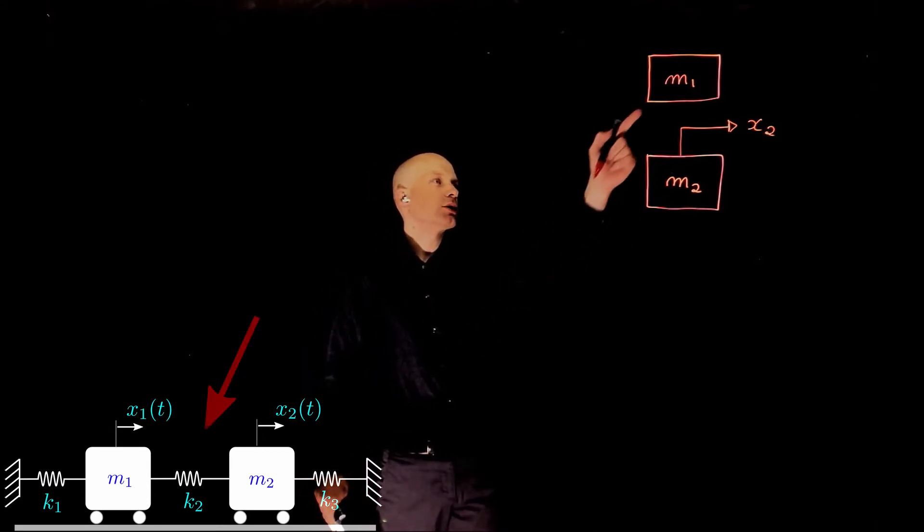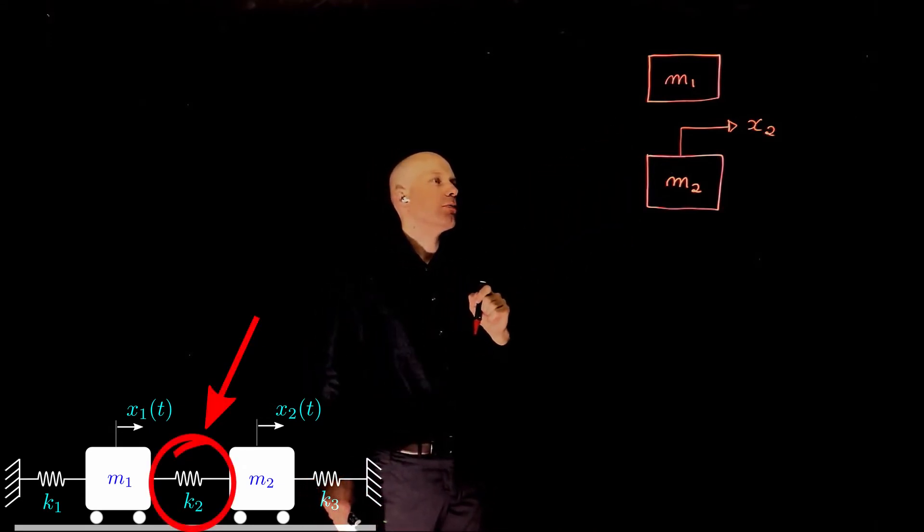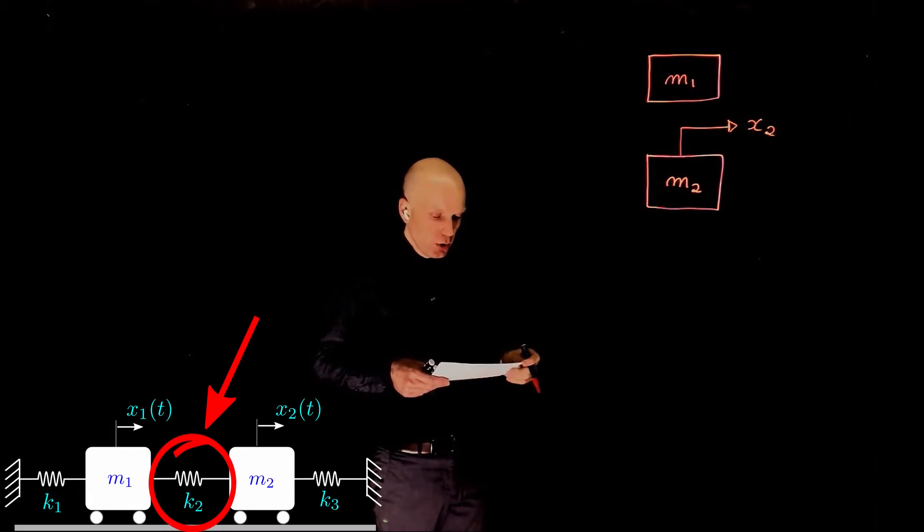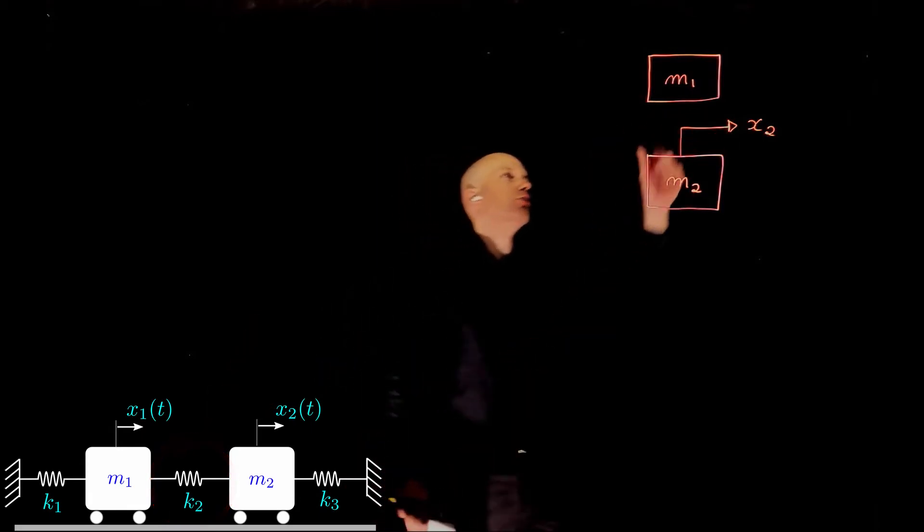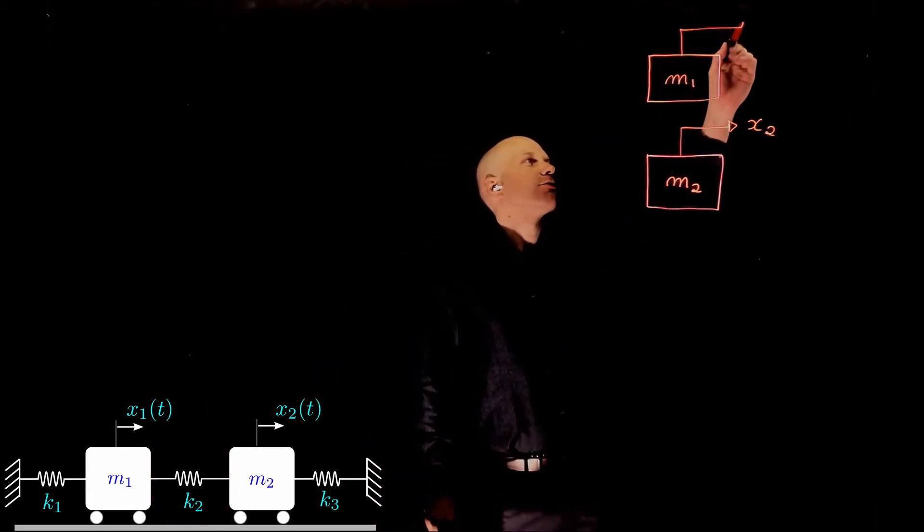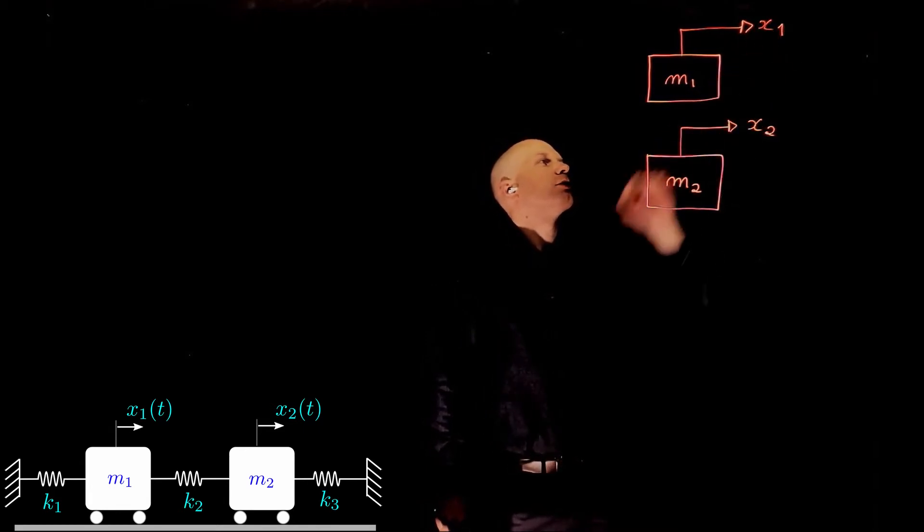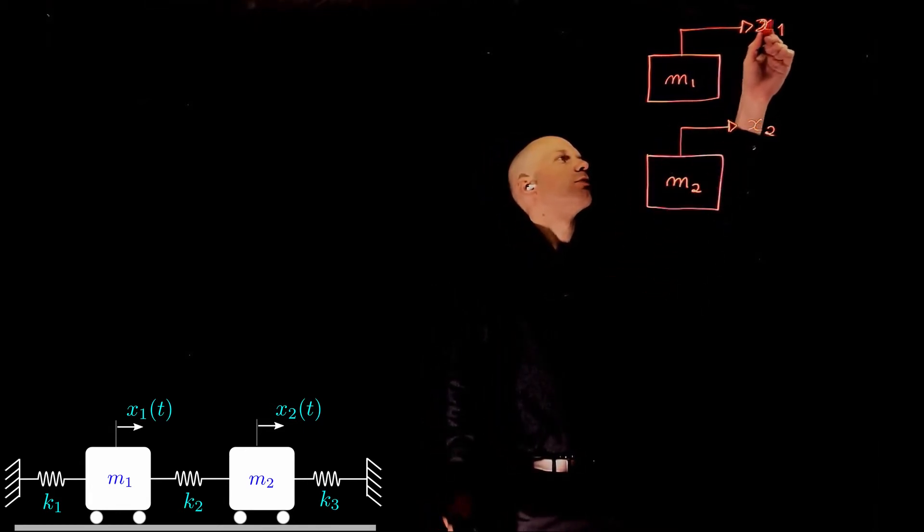m2 is connected to m1 through a spring, which means that m1 will also move to the right. So let's give m1 a displacement, x1.